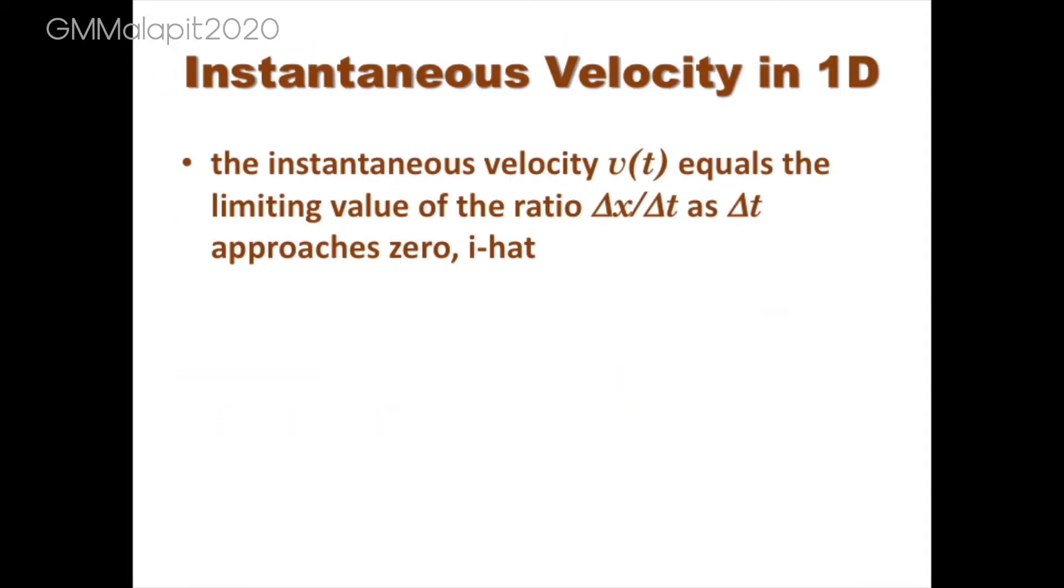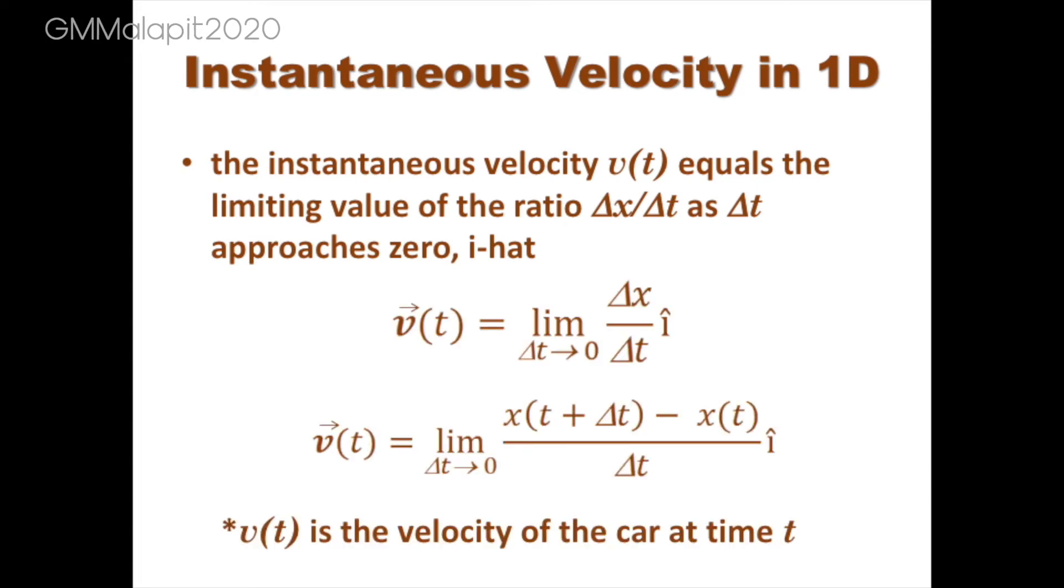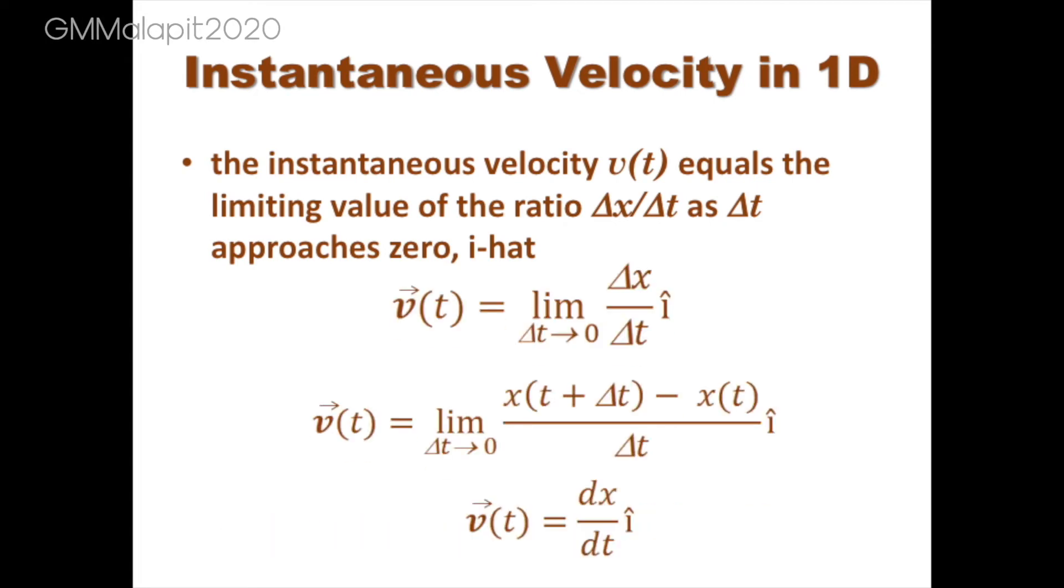Thus, the instantaneous velocity V(t) equals the limiting value of the ratio delta x over delta t as delta t approaches zero, i hat. This limit is called the derivative of x with respect to t. In calculus notation, written as V(t) equals dx/dt i hat.